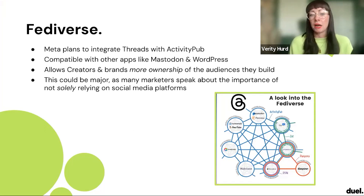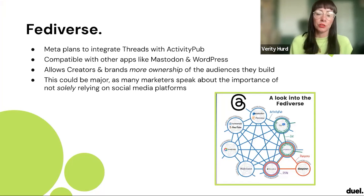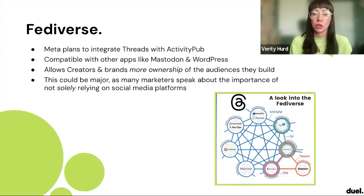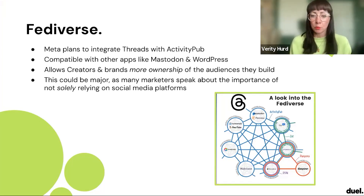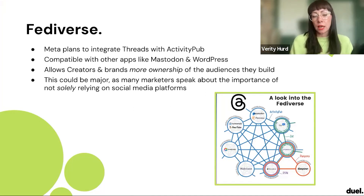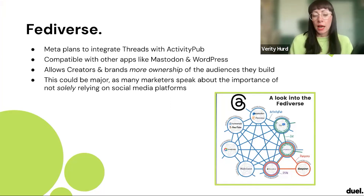This is all part of their transparency movement. If they go down this route — which they're obviously planning — it means that as creators and brands, we have more ownership of our audiences and we own our own data. The head of Instagram has said brands and creators should own their own audiences and data. Meta historically has not been great when it comes to data and has had quite a bad relationship with users around that, so this is their way of really trying to improve it.